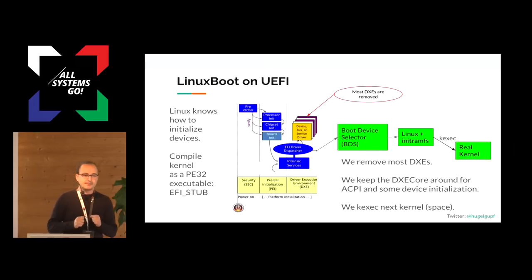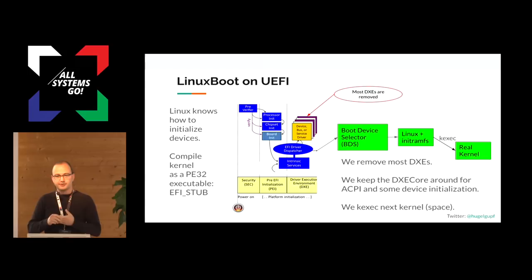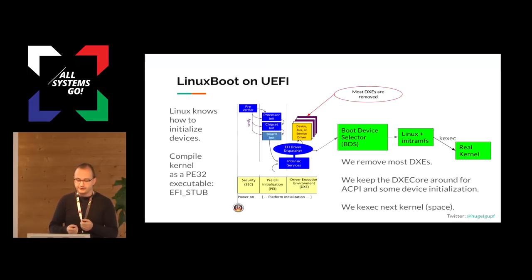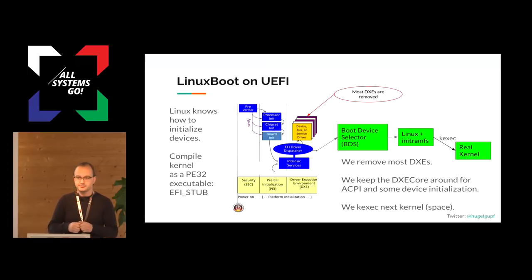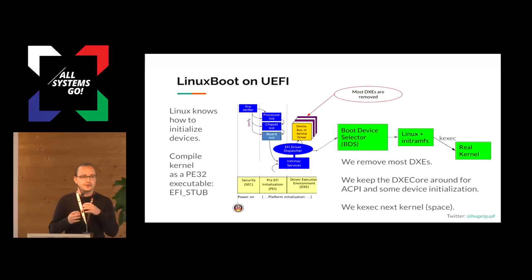So with that — taking the observation that you can run arbitrary PE32 executables in ring zero in UEFI — I'll tell you that you can compile the Linux kernel as a PE32 executable. What we started with is we took the UEFI shell, scooped out the code section, and replaced it with a Linux kernel compiled with CONFIG_EFI_STUB. It turns out this works pretty well, even if you remove most of the drivers on the system, because Linux knows how to initialize most devices — disc drivers, network cards — in most cases without any interaction with firmware beforehand, except for ACPI and similar tables. Those usually come from the driver dispatcher, not from any individual drivers.